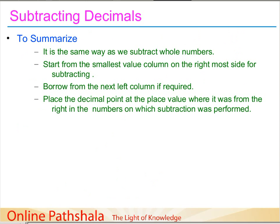To summarize: subtracting decimals is the same as subtracting whole numbers — there are no new signs. We start from the smallest value column on the rightmost side and borrow from the next left column if required. Then we place the decimal point at the same place value position as it appears in the original numbers — checking whether it shifts 2 or 3 place values and applying the same in the answer.